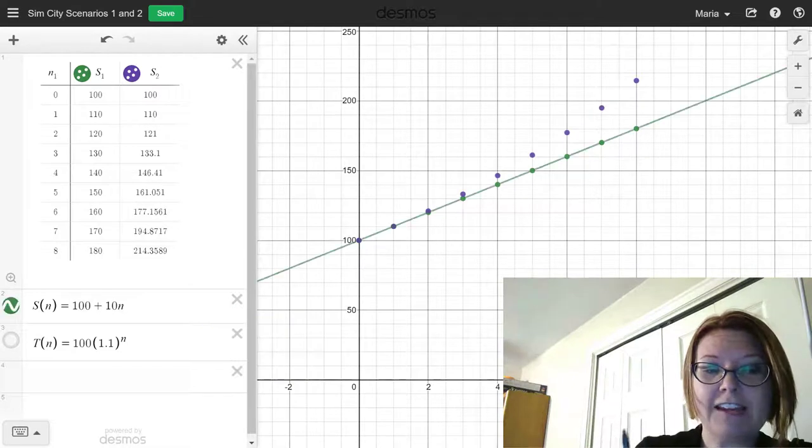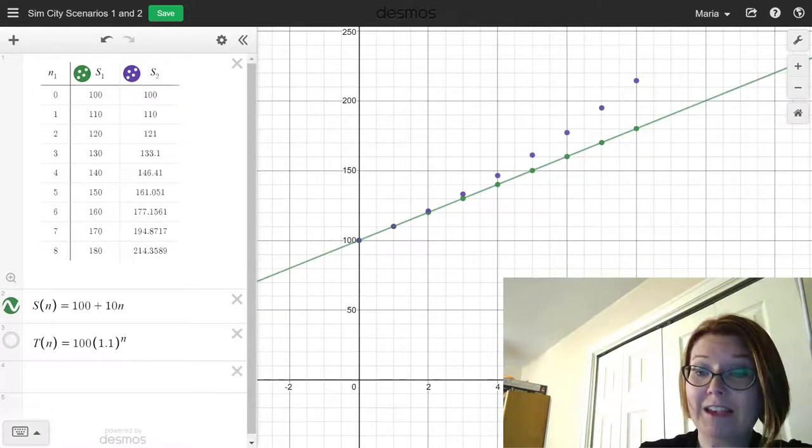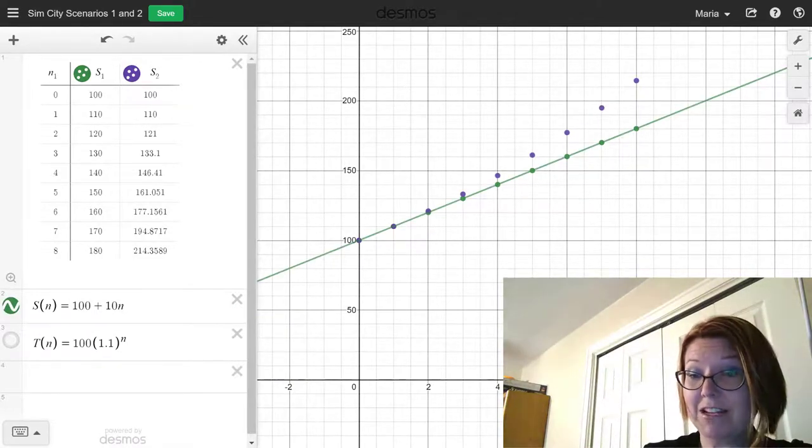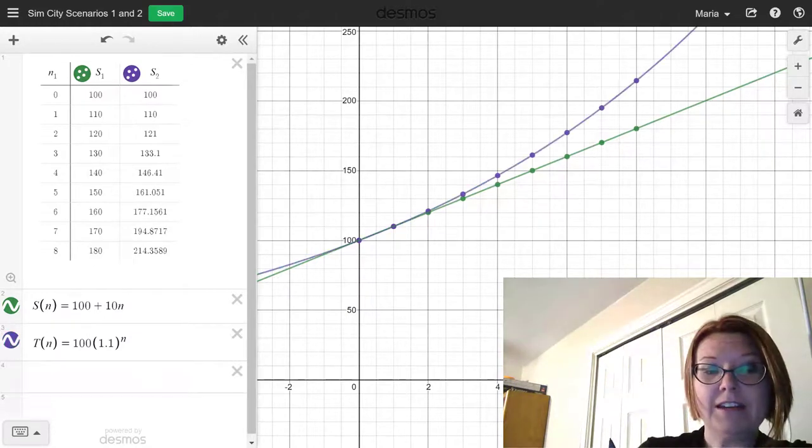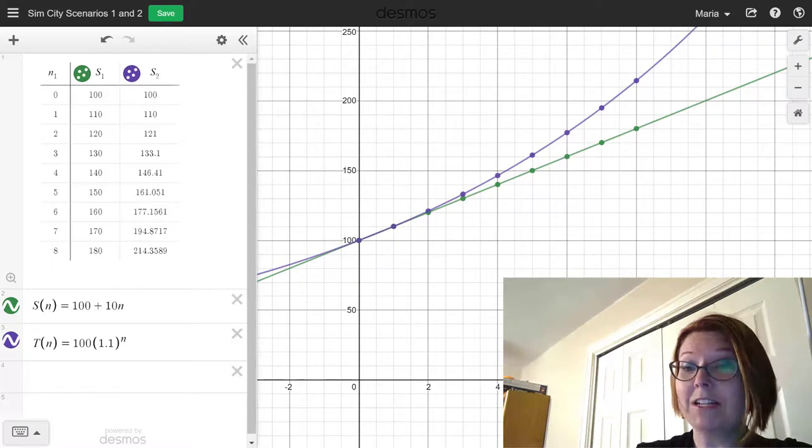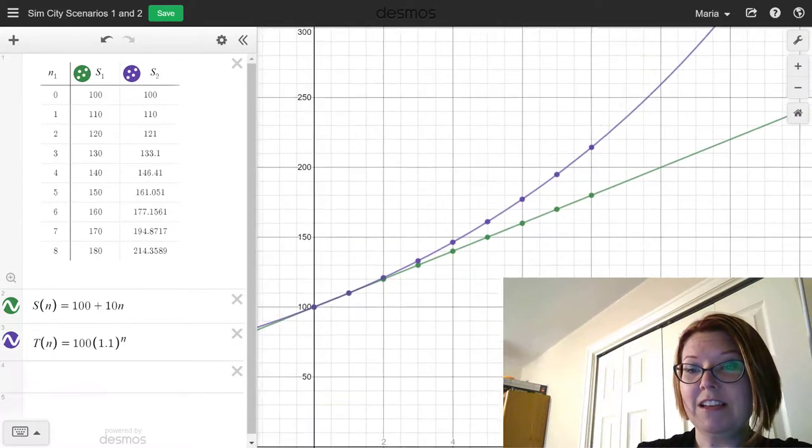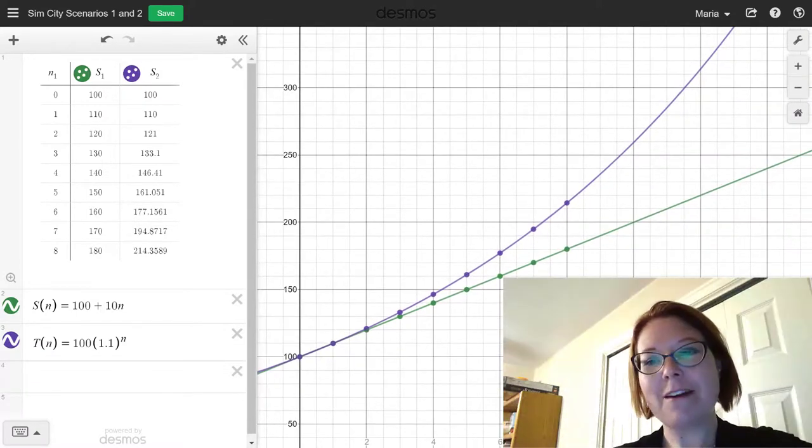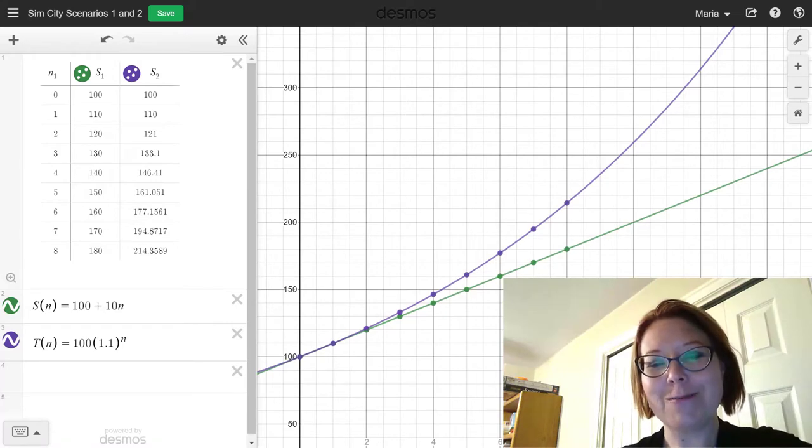First I'll add capital S(n), that's the straight line. You can see that's a nice straight line. And then I'll add T(n), which is the 100 times 1.1 to the n. You can see that that does curve. In fact, if I zoom out in this graph, you can see the curve even more.